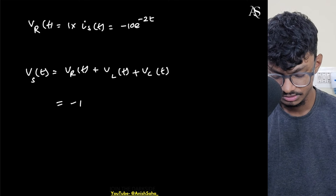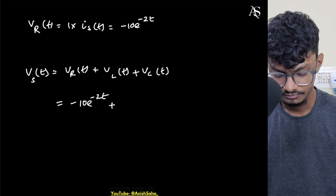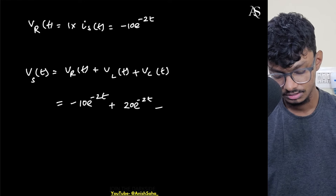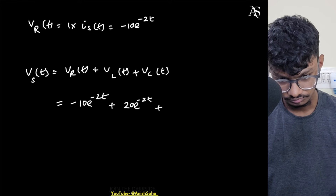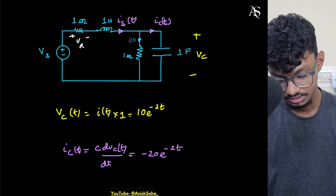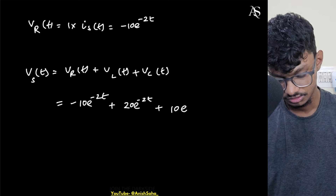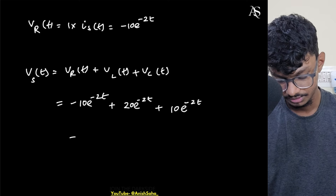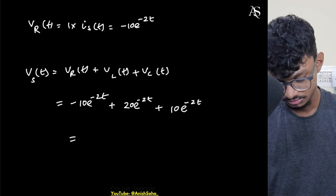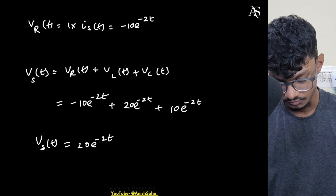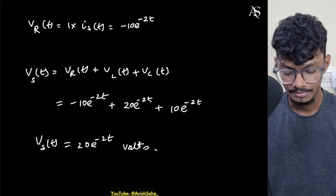VR(t) = -10e^(-2t), VL(t) = +20e^(-2t), and Vc(t) = 10e^(-2t). Adding them: -10 + 20 + 10 = 20, so Vs(t) = 20e^(-2t) volts.